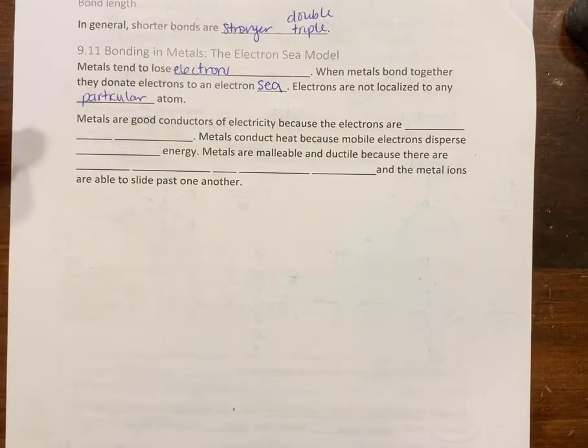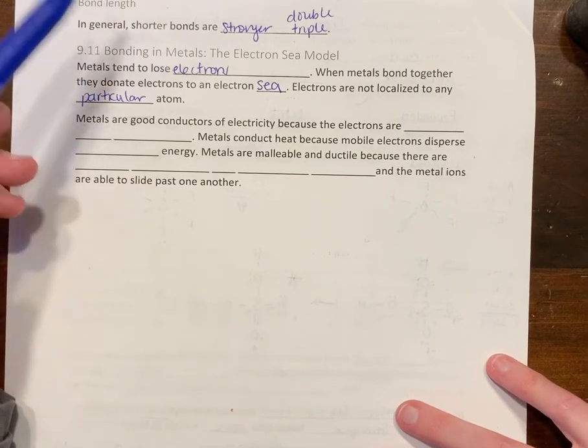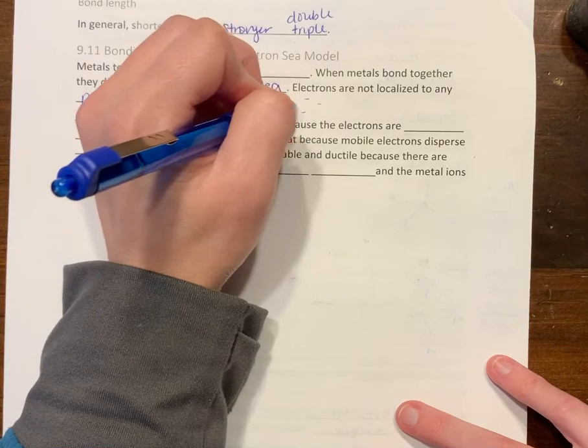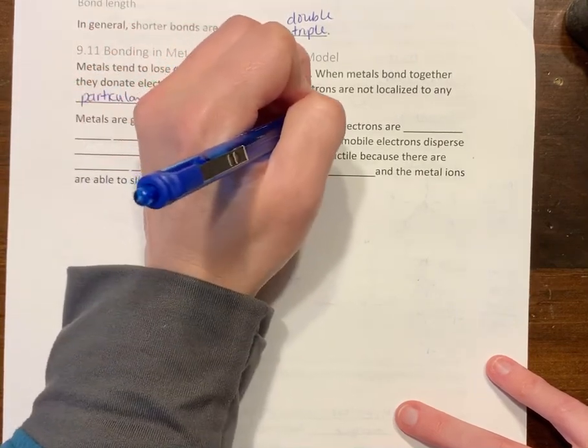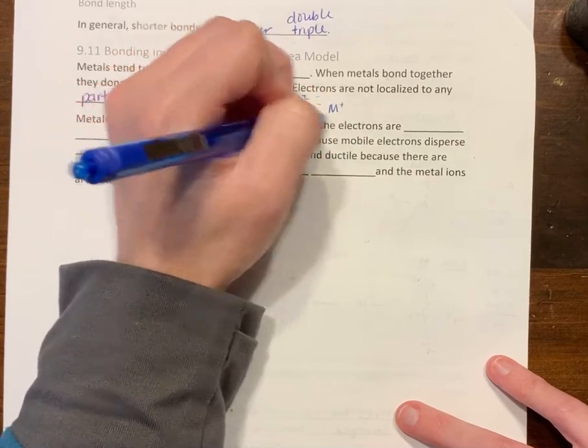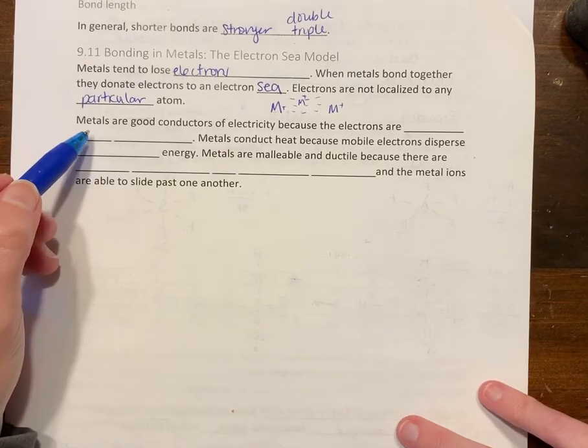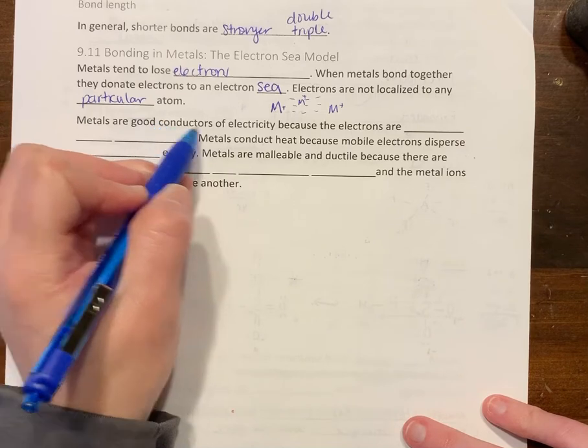In this metal bonding, the electrons are just floating around. You've got your metal—this is a generic M for metal—and it's positive. The electrons are just moving around it to stabilize it.